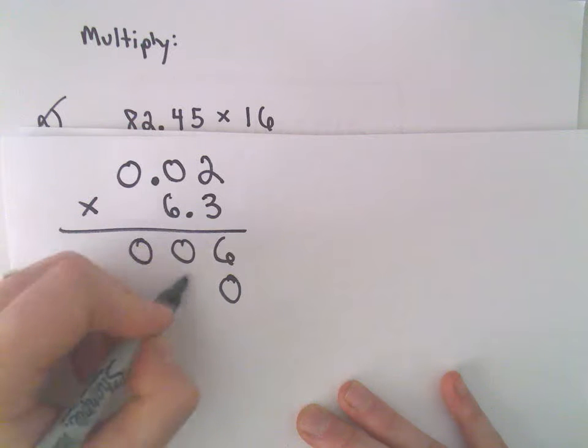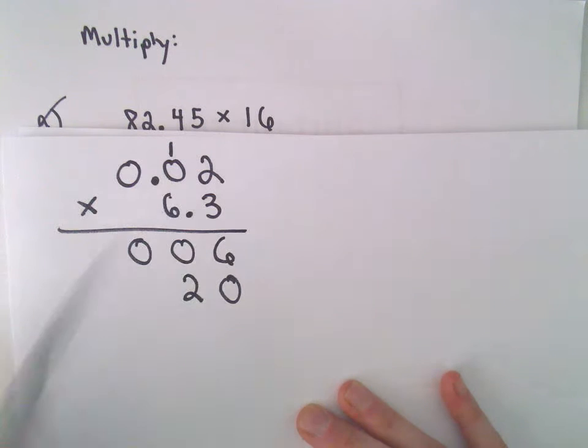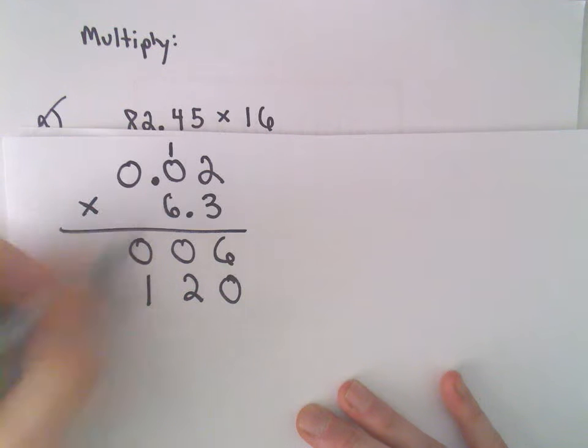6 times 2 is going to be 12, so I'll keep the 2, carry the 1. 6 times 0 is 0, plus 1 will be 1. And then we'll have 6 times 0, which is 0.